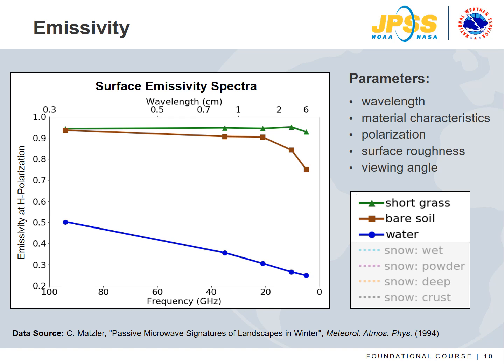Emissivity depends on a number of parameters, such as wavelength or frequency, and the emitting material characteristics. This includes conductivity, water content, and salinity — collectively referred to as dielectric properties. Polarization, surface roughness, and viewing angle also have an effect.